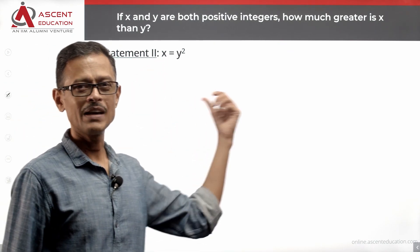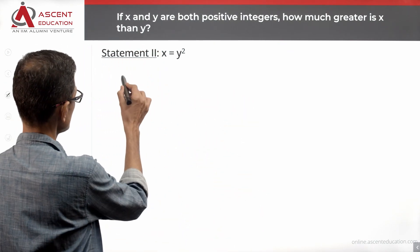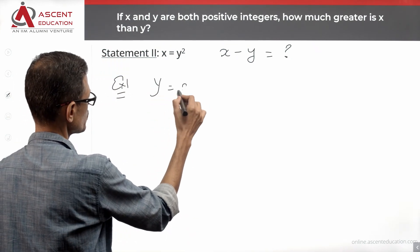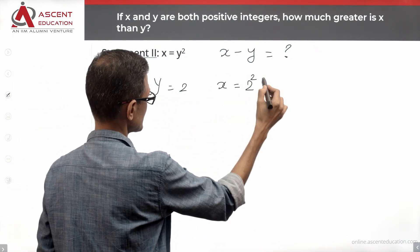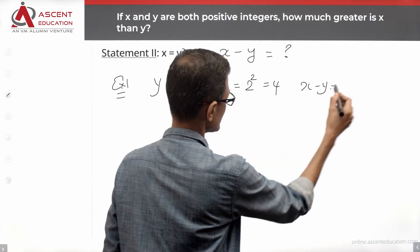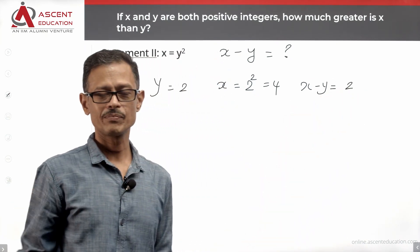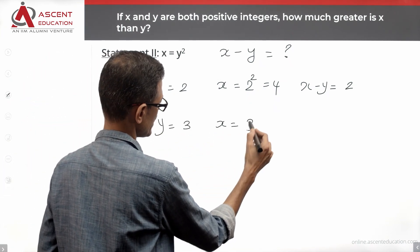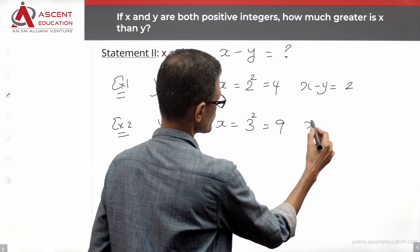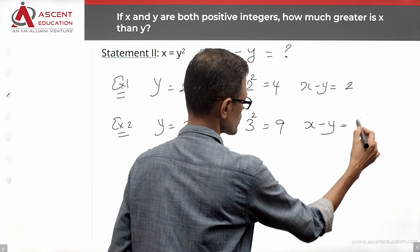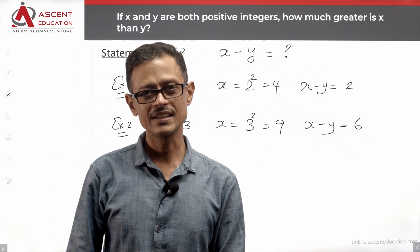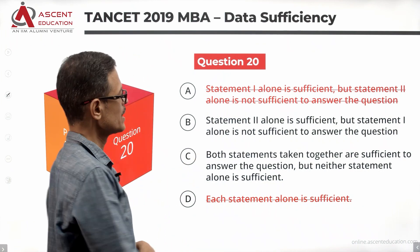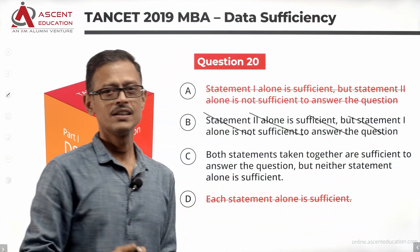Let's evaluate Statement 2: x is equal to y squared. Example 1: take y = 2. Then x = 2 squared = 4, so x minus y = 4 minus 2 = 2. Example 2: take y = 3. Then x = 3 squared = 9, so x minus y = 9 minus 3 = 6. There are infinite possibilities, so Statement 2 alone is not sufficient either. We eliminate answer option B. Choice C is the correct answer.